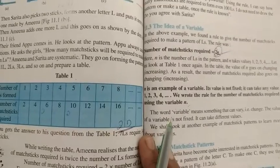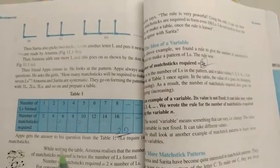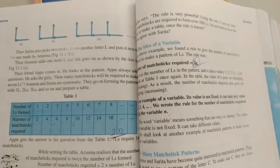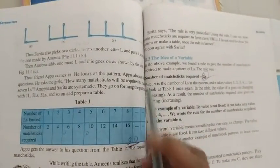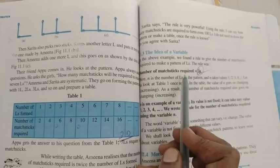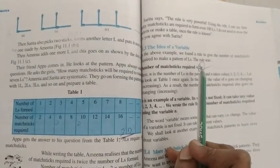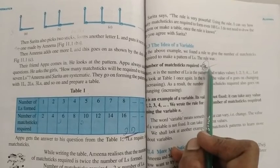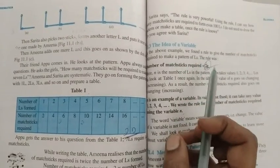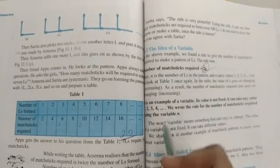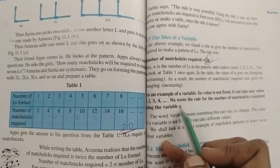Hi children, good afternoon. Today, next concept based on matchstick patterns. Yesterday two matchstick patterns you have formed. Today more matchstick patterns. See here children, number of matchstick required 2n. n is variable. 2 is number. Number is fixed. n is variable. n is an example of variable. Value is not fixed. We can take any value. For example, 1, 2, 3, up to infinity numbers you have to take. We wrote the rule for the number of matchstick required using the variable n.